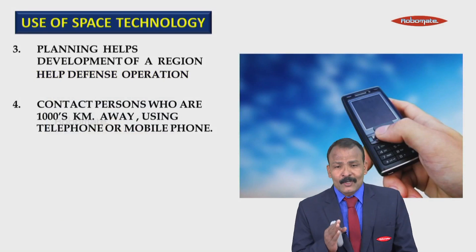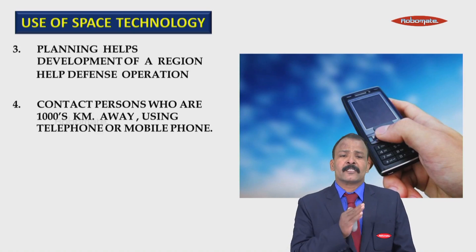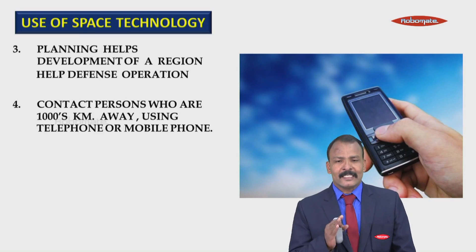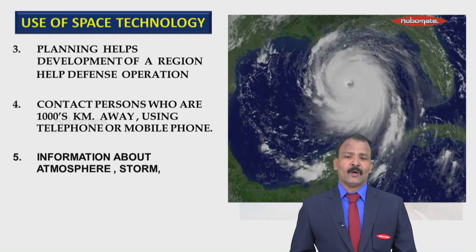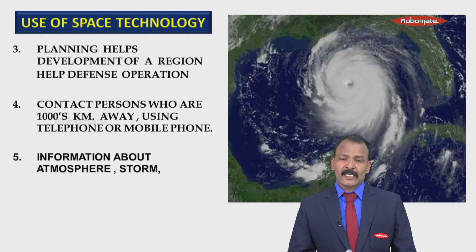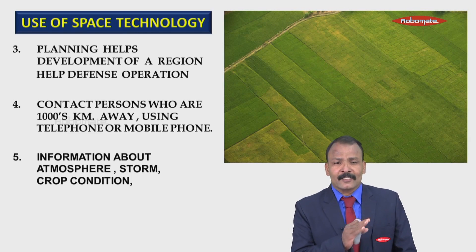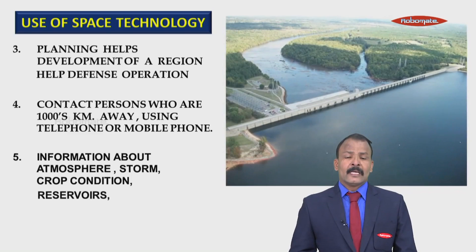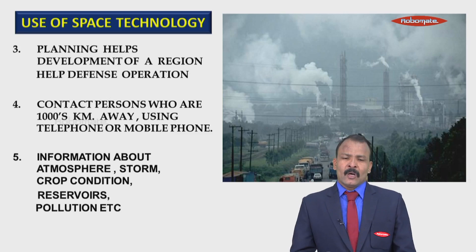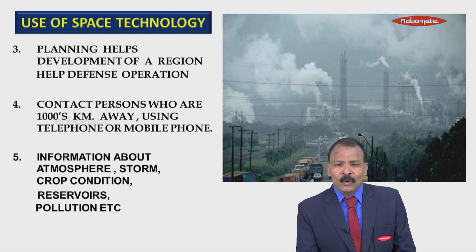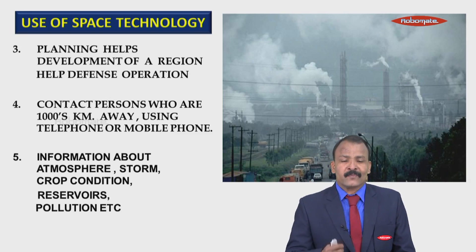It is also possible to contact people who are thousands of kilometers away simply by using telephones or mobile phones. Information about the atmosphere, upcoming storms, crop conditions in any part of the country, reservoirs, and pollution in various regions — all this information can be easily obtained by making use of space technology.